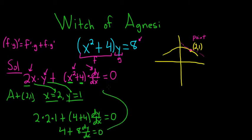Let's subtract the 4. So we have 8 dy/dx equals negative 4 and then dividing by 8 we end up with dy/dx equals negative 4 over 8.